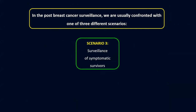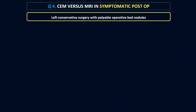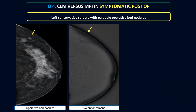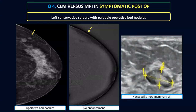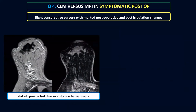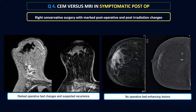For scenario three — symptomatic survivor surveillance — this should be taken seriously and we should proceed to more advanced imaging. One patient with left conservative surgery and palpable operative bed nodules had contrast mammography showing no contrast uptake — these were simply non-specific intramammary lymph nodes. Another case with right conservative surgery and exaggerated post-operative inflammatory changes: MRI suggested operative bed recurrence with pre-pectoral edema and diffuse skin thickening. However, looking at the contrast mammogram, there were no operative bed enhancing lesions — biopsy revealed simple inflammatory changes at the operative bed, where contrast mammography was the more accurate modality.